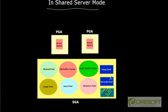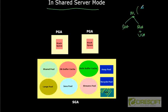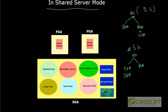So essentially we have two things: SGA and PGA. UGA is a part of PGA in dedicated server mode. In shared server mode, SGA contains the UGA, and then we just have PGA. This is how the memory structure is aligned, and we are going to discuss in more detail about the intricacies of all these different memory areas in our next set of videos.